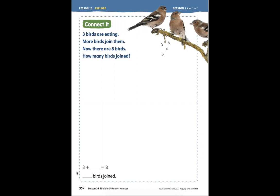We are on page 354, lesson 16 session 1, and we're learning how to solve for the unknown number in story problems. Here it says three birds are eating, more birds join them. There's the word 'join' - that's a connecting word that means we're going to put something together with the three that are eating now.